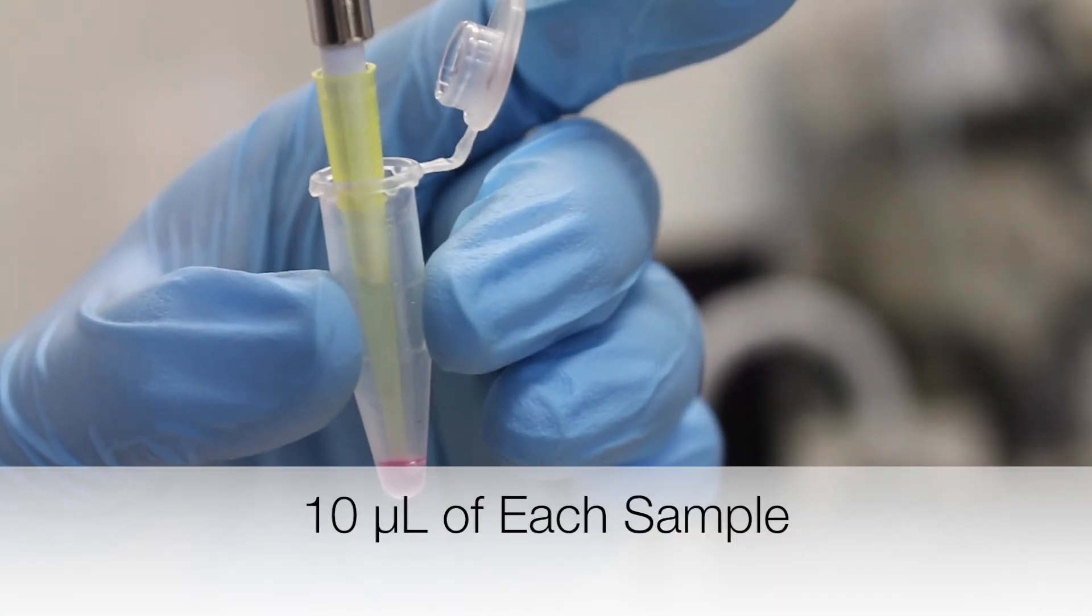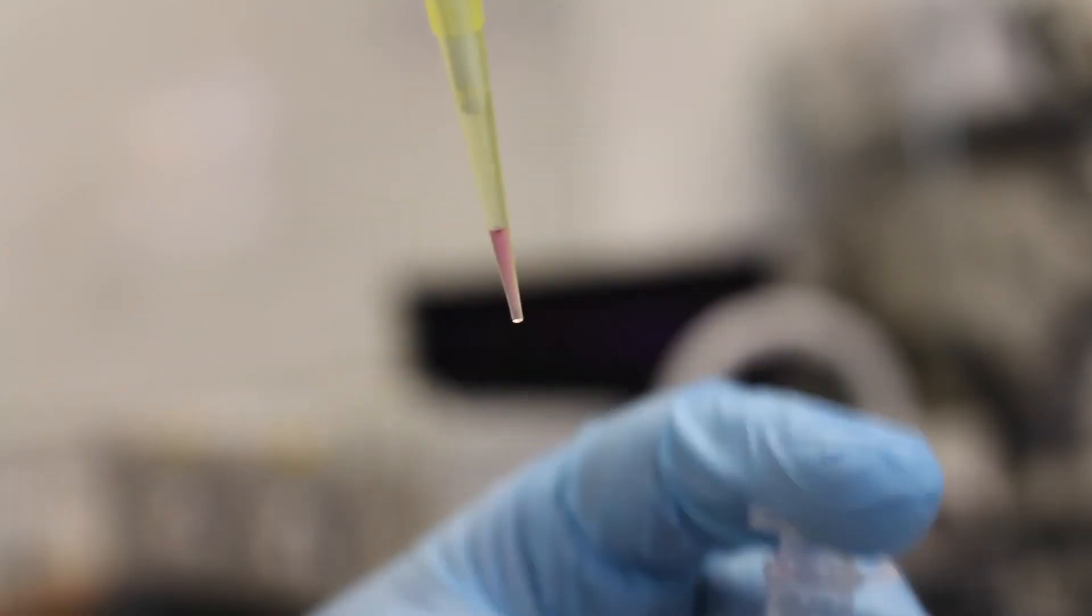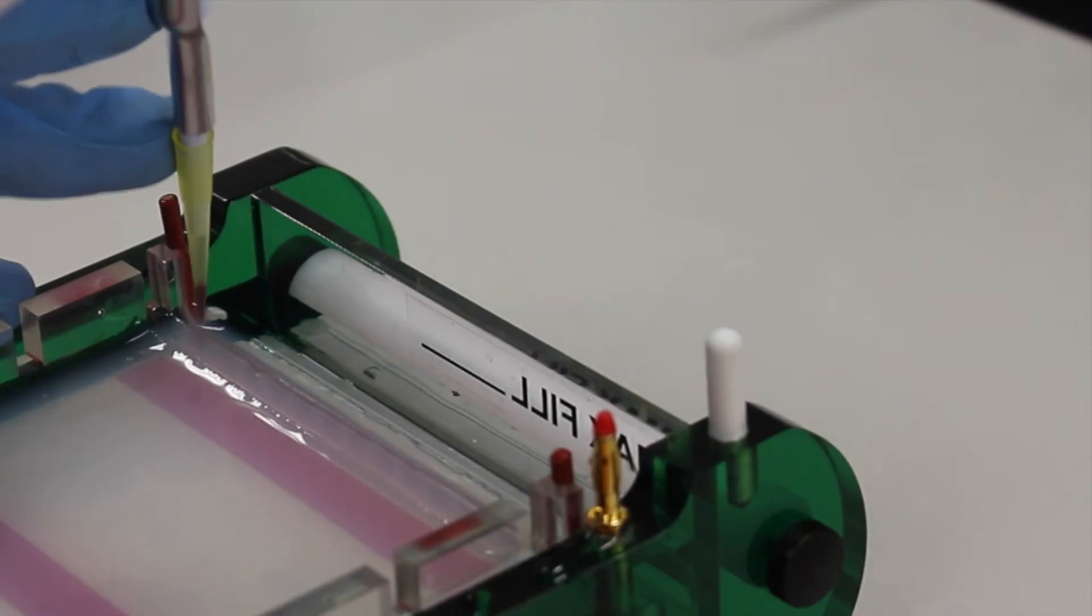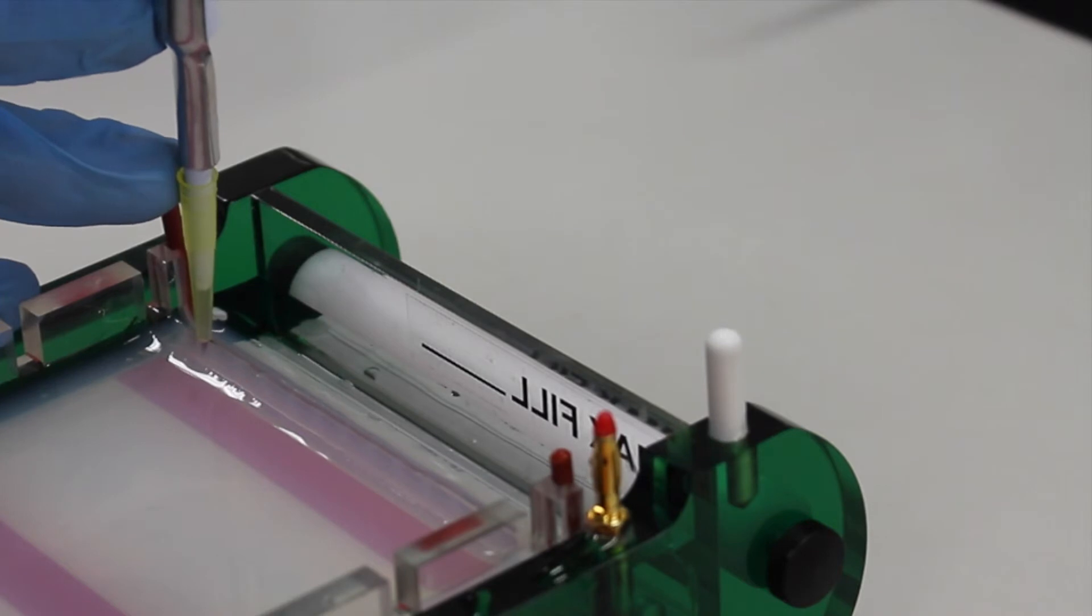10 microliters of each sample is loaded into separate wells of the gel. The DNA ladder is loaded into the first well. The other samples are loaded in a similar manner.